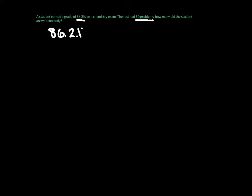Let's get to practicing. Question one says: a student earned a grade of 86.2% on a chemistry exam. The test had 50 problems. How many did the student answer correctly? So we have two pieces of information here — the grade, which was 86.2%, and the number of problems, which was 50. So let's write that over here: 86.2% was the grade, and the test had a total of 50 problems, which is our total.